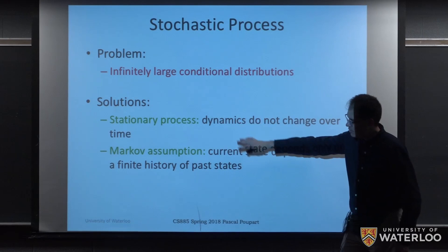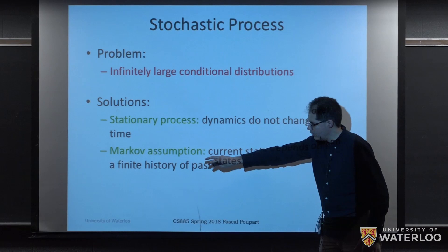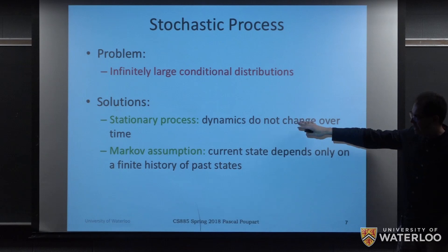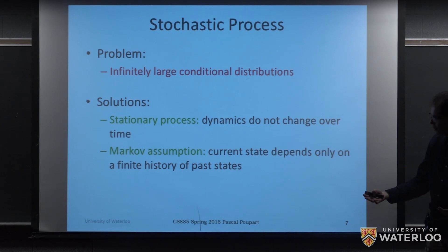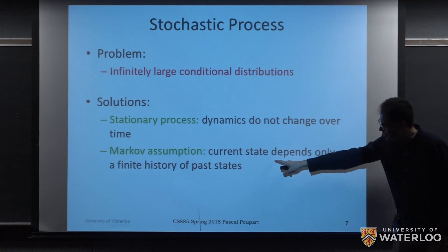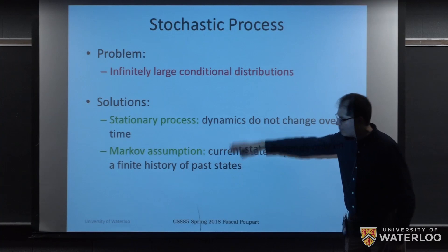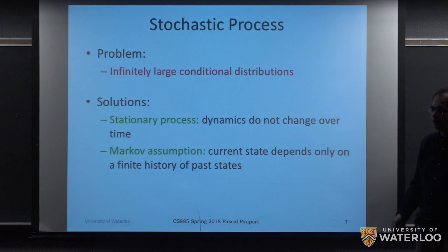The solution to this is going to be to make two assumptions. First, we're going to assume that a process is stationary. And second, that the process satisfies the Markovian property. What I mean by a stationary process is that the dynamics do not change over time — we've seen this already in the context of weather prediction. The Markovian assumption is going to be that the current state depends only on a finite history of past states — this was the idea that there's a short history that is sufficient. These are two very important assumptions that are very common and that we're going to make use of as part of our definitions.